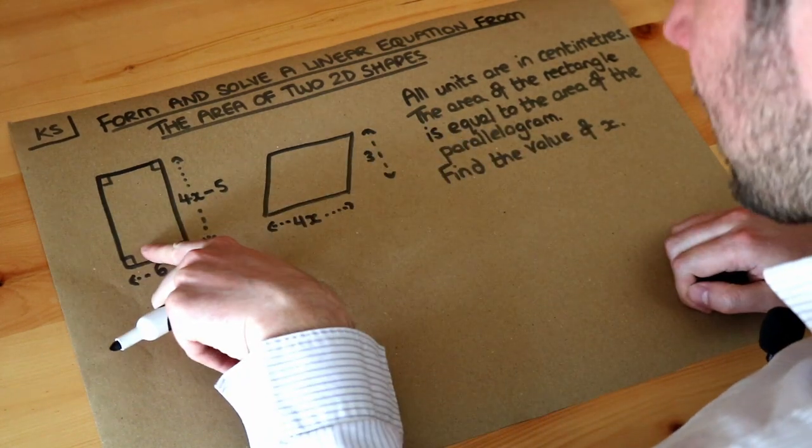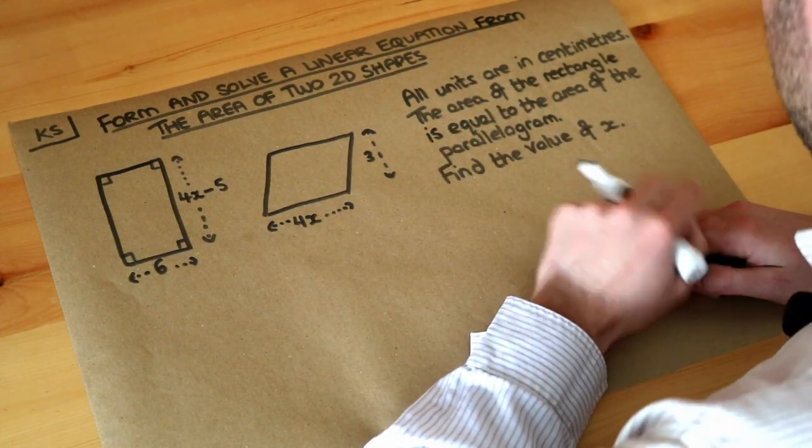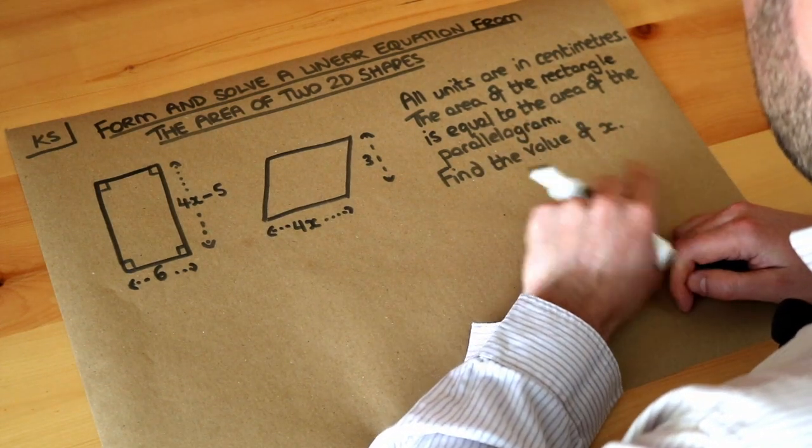So let's look at this problem. We've got a rectangle, we've got a parallelogram. All units are in centimeters. The area of the rectangle is equal to the area of the parallelogram. Find the value of x.